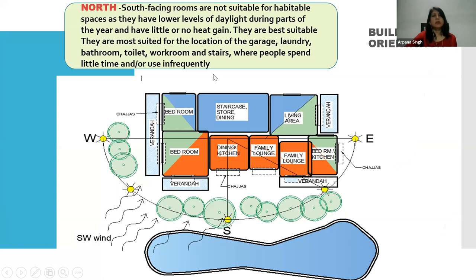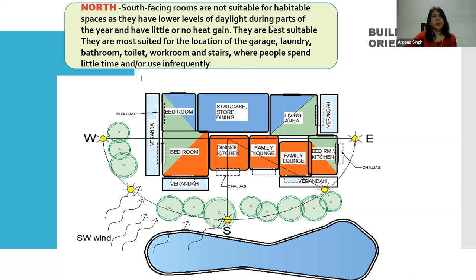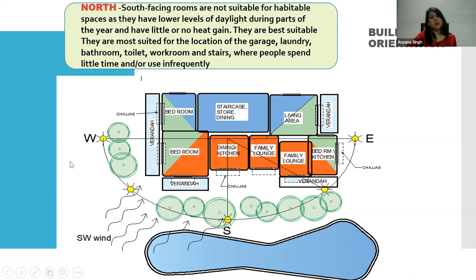North-facing rooms are not suitable for habitable spaces as they have lower levels of daylight during parts of the year and have little or no heat gain. Habitable spaces are bedrooms, sitting lounge, and dining. North-facing areas are best suited for garage, laundry, bathroom, toilet, washroom, and stairs - places where people spend little time or use infrequently. That way these spaces are still utilized without affecting comfort much.